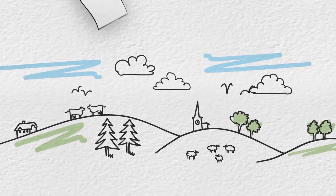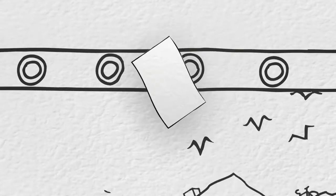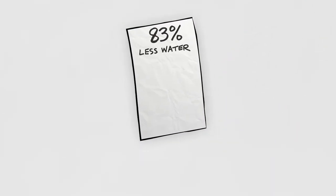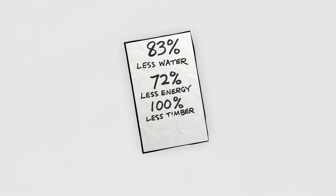So when a normal sheet of paper reaches the end of its life, remarkable loop paper lives on up to 20 times longer than normal paper. It uses 83% less water, 72% less energy, and 100% less timber.